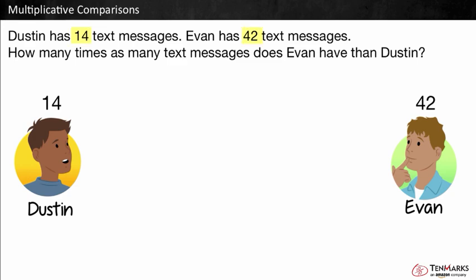14 and 42 are both specific amounts. Here it's the number of text messages. We want to find out how many times as many as. We can think how many groups of 14 make 42.